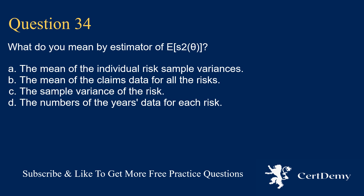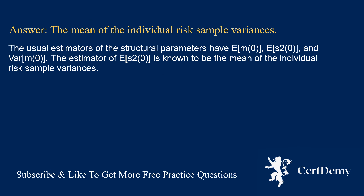Question 34. What do you mean by the estimator of E(S²(Theta))? Options: the mean of individual risk sample variance; the mean of the claims data for all risks; the sample variance of the risk; the number of years of data for each risk. The answer is: the mean of the individual risk sample variance. The usual estimators of the structural parameters involve E(M(Theta)), E(S²(Theta)), and Var(M(Theta)). The estimator of E(S²(Theta)) is known to be the mean of the individual risk sample variances.